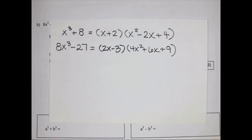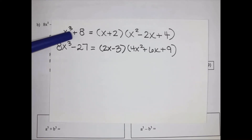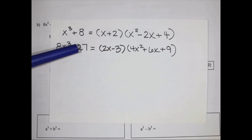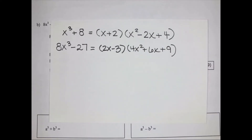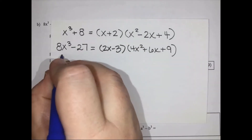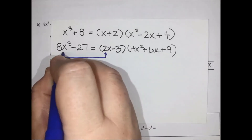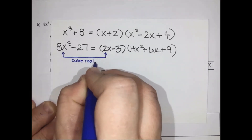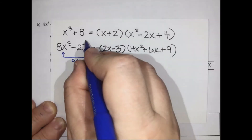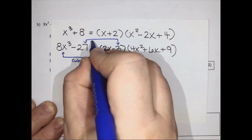Just like with the difference of squares where we square root each term, here we are doing the cube root — the third root — of each term. You'll also notice that the sign in between the terms matches the sign in that first bracket. So to get the first bracket, we simply cube root each of the terms, and the same applies going from the second expression to its first bracket.